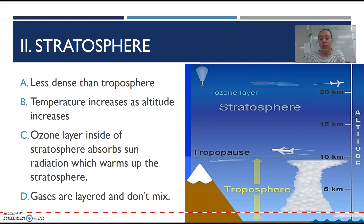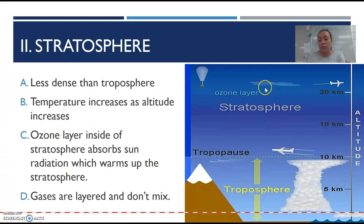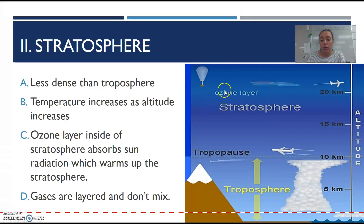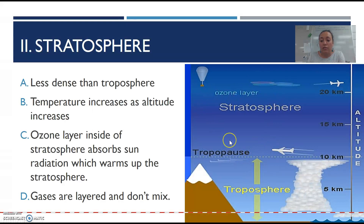Right above the troposphere we have the stratosphere. This includes your ozone layer — that's important to know, you'll get a question about that. It's less dense than the troposphere because gravity is pulling everything down. As altitude increases, the temperature increases — and that's because the ozone layer absorbs all the sun rays, which warms up the stratosphere. The gases are all layered; they don't mix. There are layers upon layers of gases.